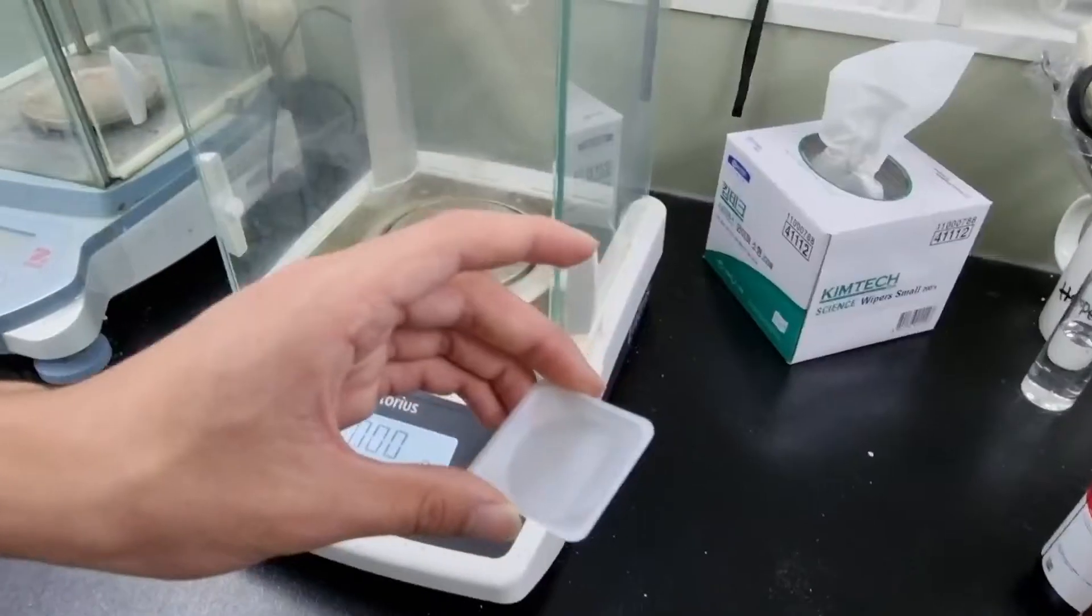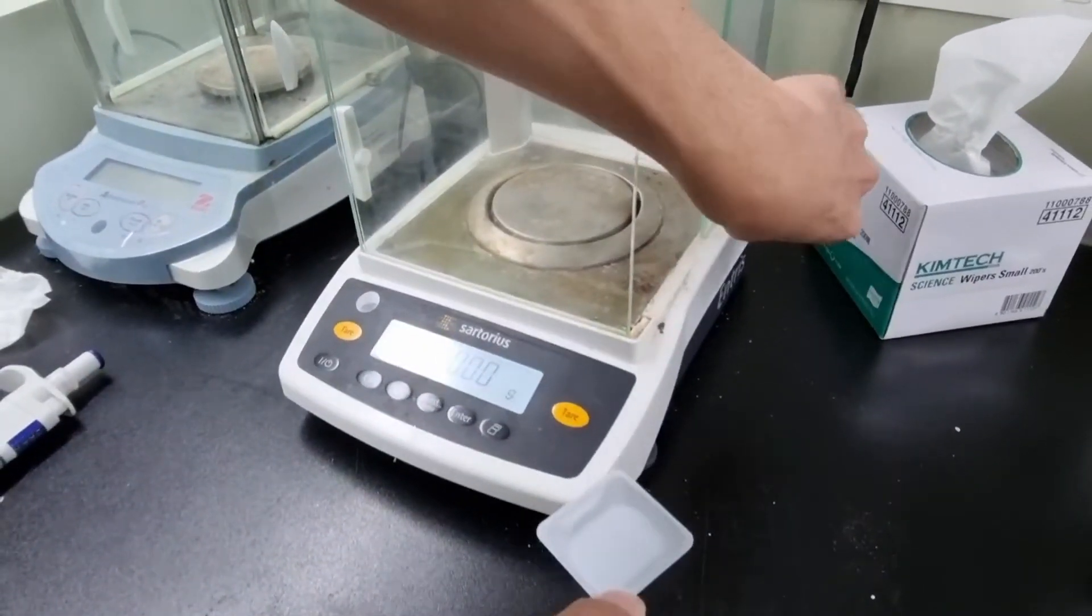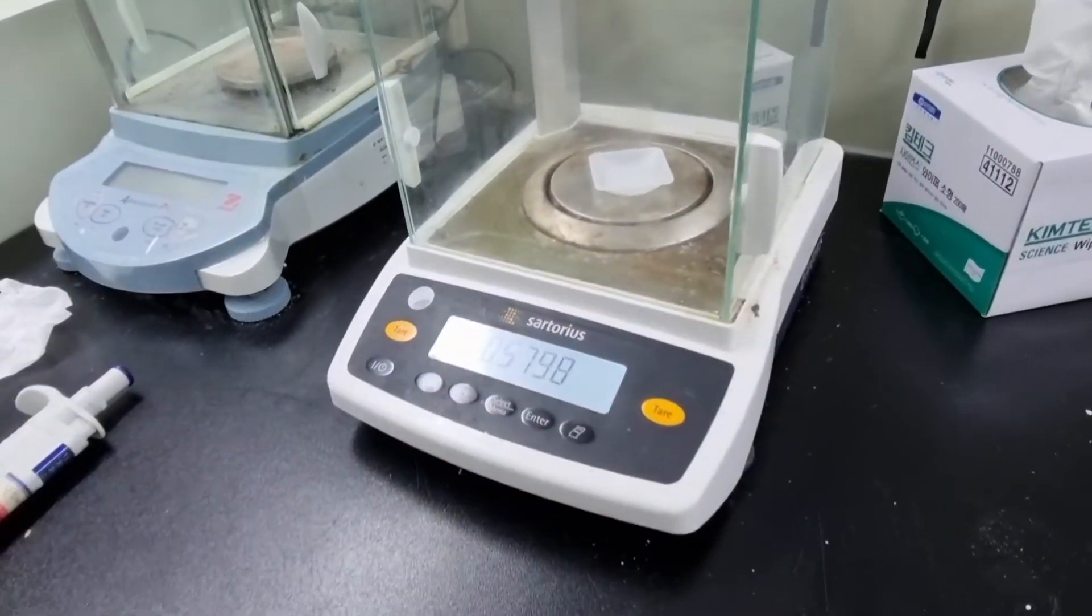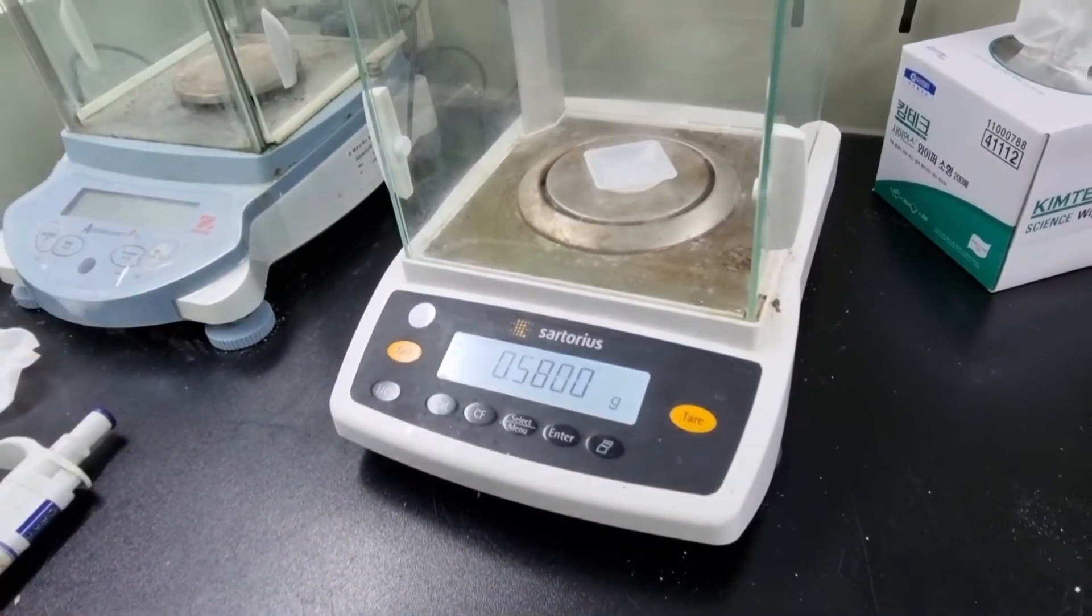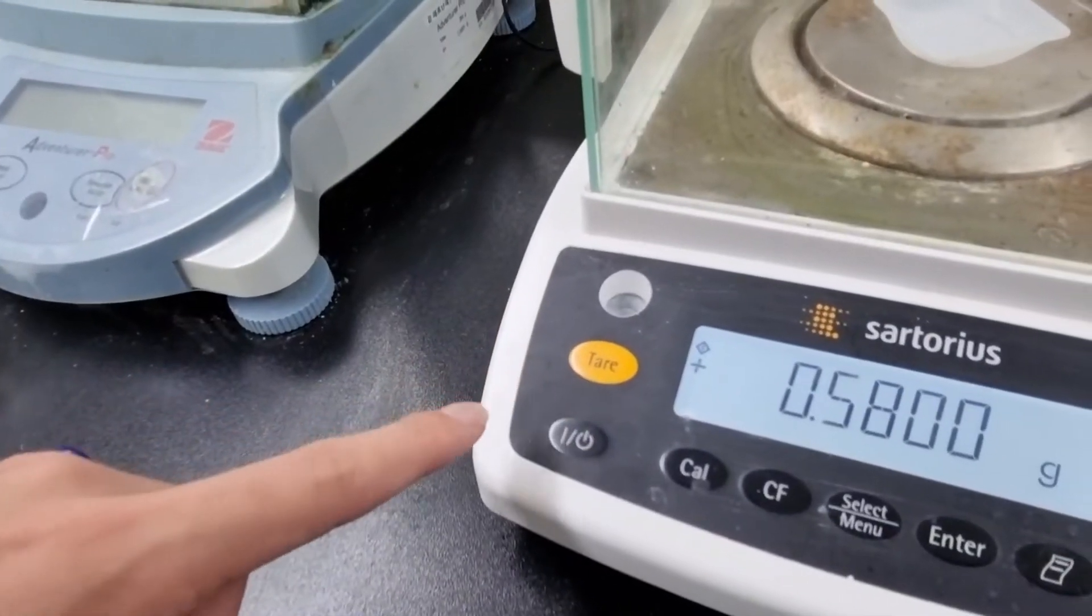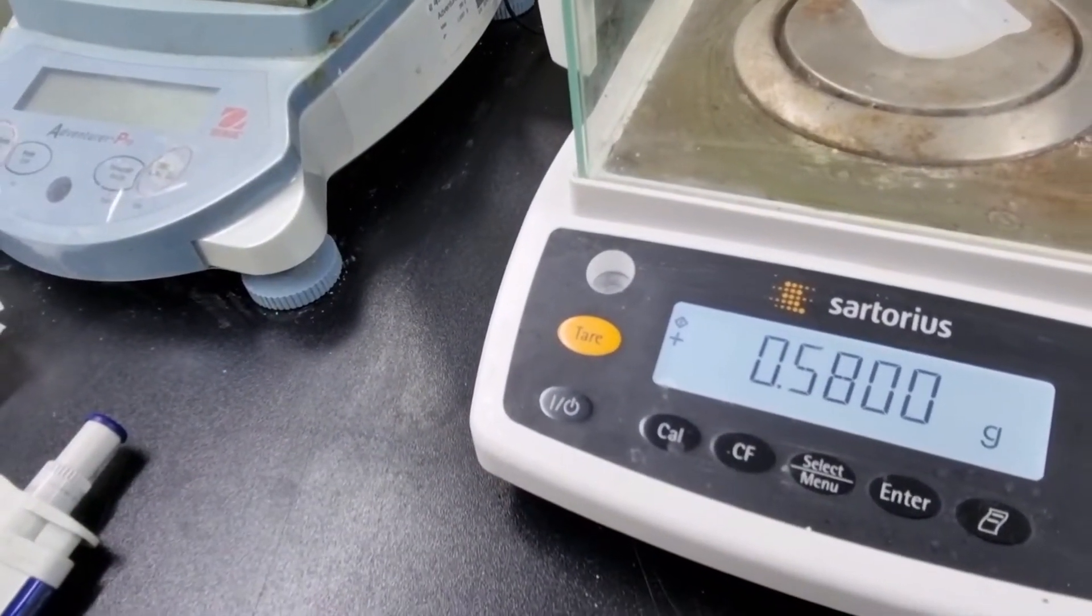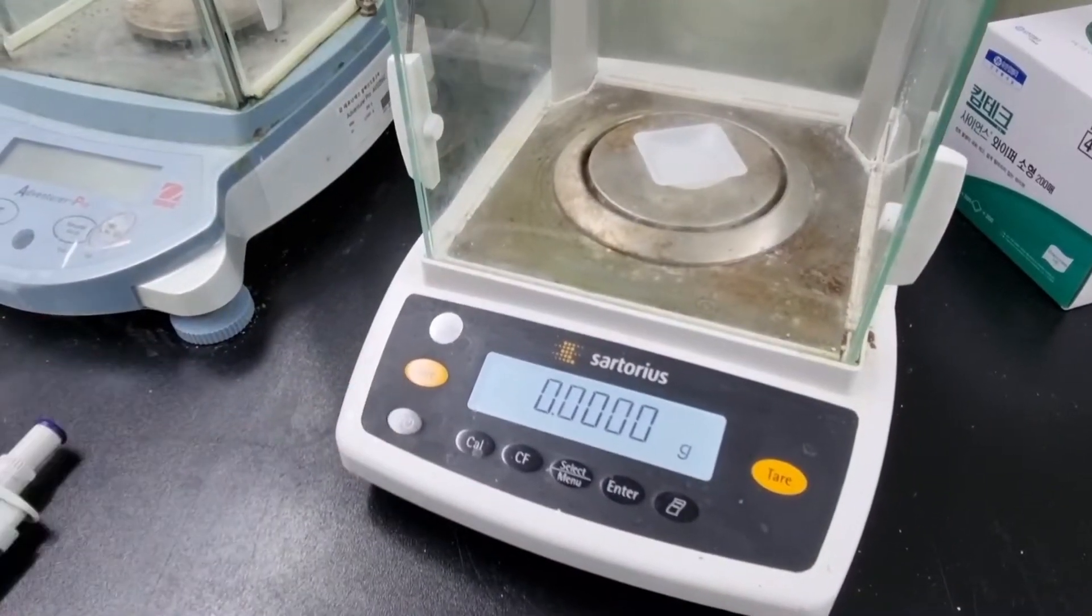And then you put the weighing dish inside the balance. And you can see that the number goes up. So it's much more convenient if you use the tare button. This is called, you use it for setting this, making it to zero, because the tare button deducts the weight of the weighing dish.